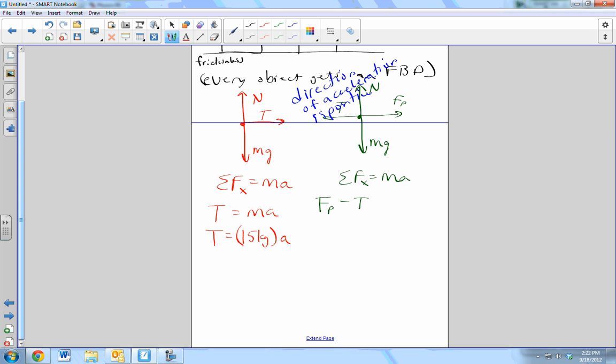Force of the push minus T equals ma. So, those are the only two forces in the x direction, so they must be equal to ma. What's the push? 30 newtons. What's tension? 15 times a, but let's hold off on that for right now. Mass? Times a.